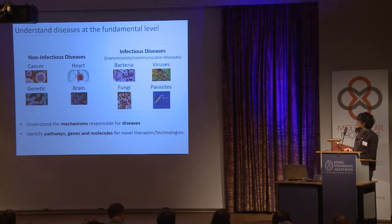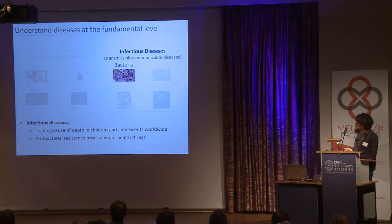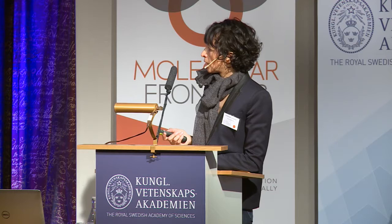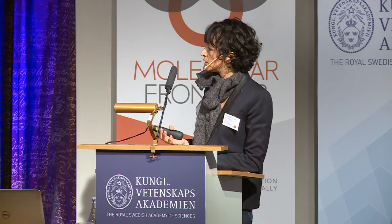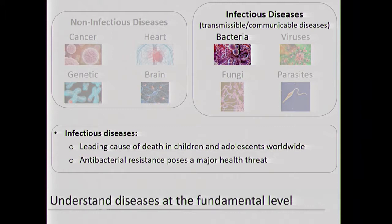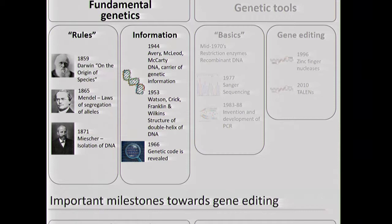In my laboratory, we don't work only on CRISPR-Cas9; we work on RNA and protein regulatory mechanisms allowing us to understand how bacteria survive in their environment and how they can cause diseases. It is critical to continue to work on bacterial infectious diseases, since it is the leading cause of deaths in children and adolescents worldwide, and antibacterial resistance poses still a major health threat, highlighted recently by the United Nations. Genetics is really critical in laboratories for understanding functions of genes and, in the medical field, to find new targets for therapeutics.